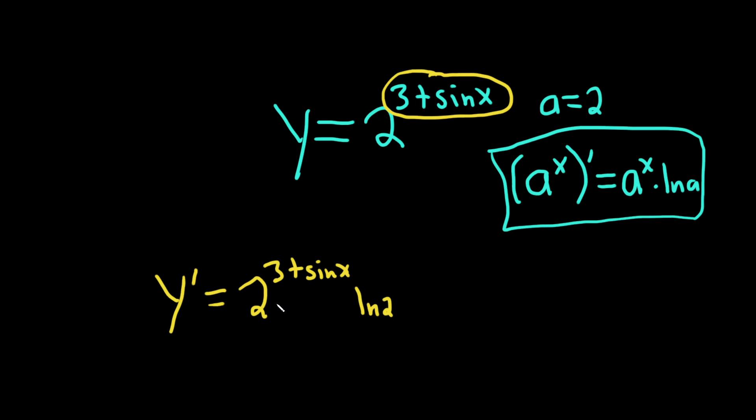So we took the derivative of the outside function, which is 2 to the x, and we evaluate it at the inside. So you basically just leave it alone. And now you multiply, times the derivative of the inside. So the derivative of 3 is 0. The derivative of sine is cosine.